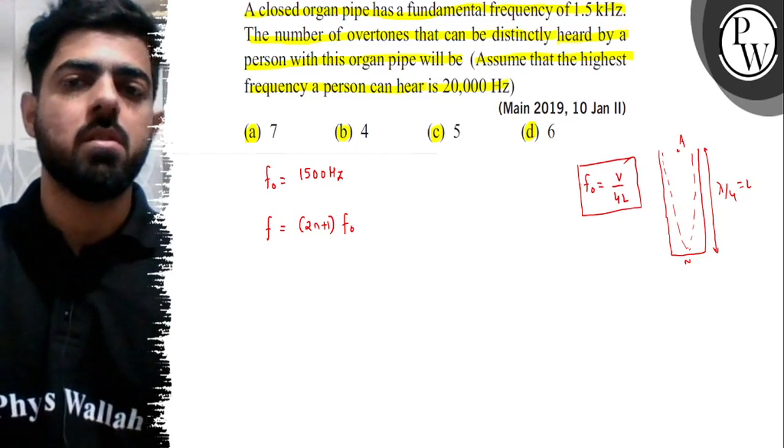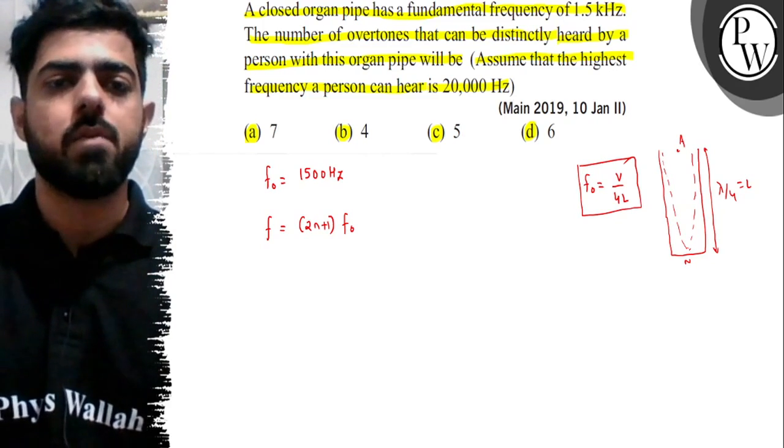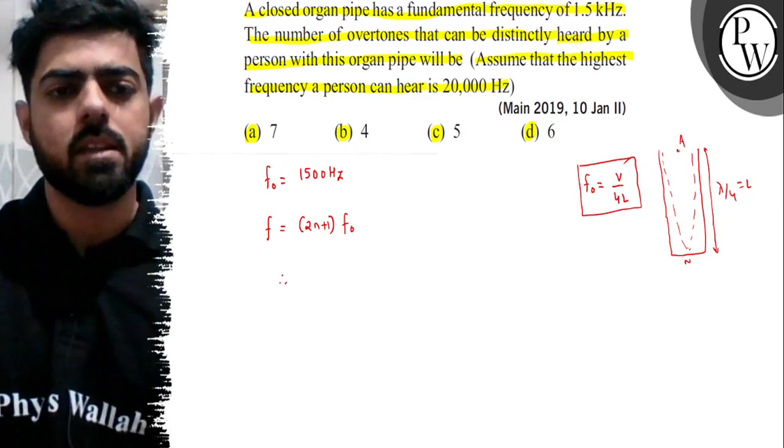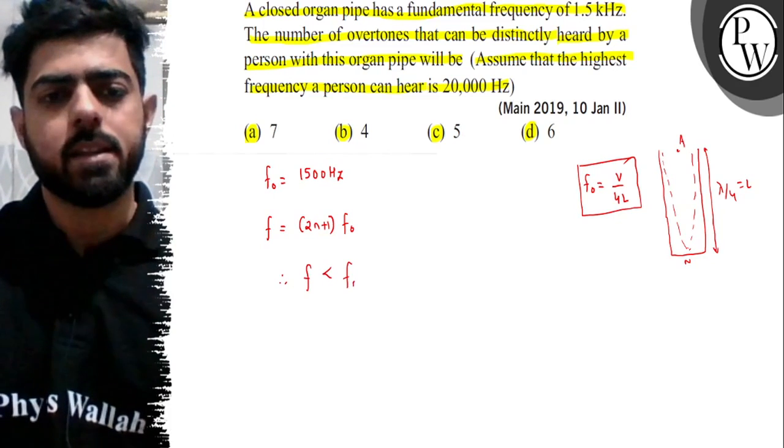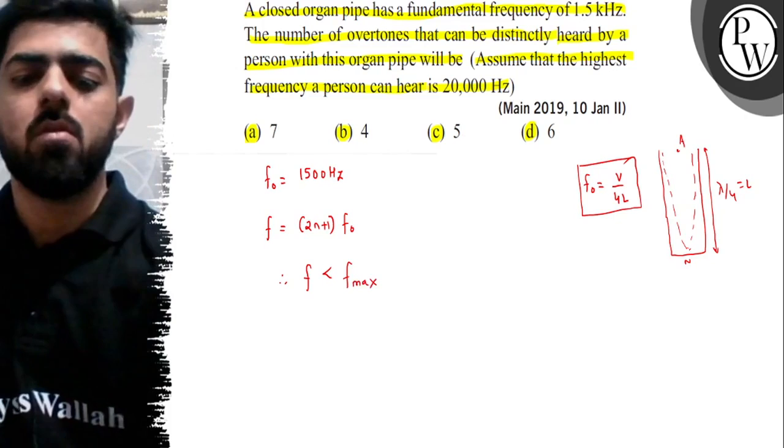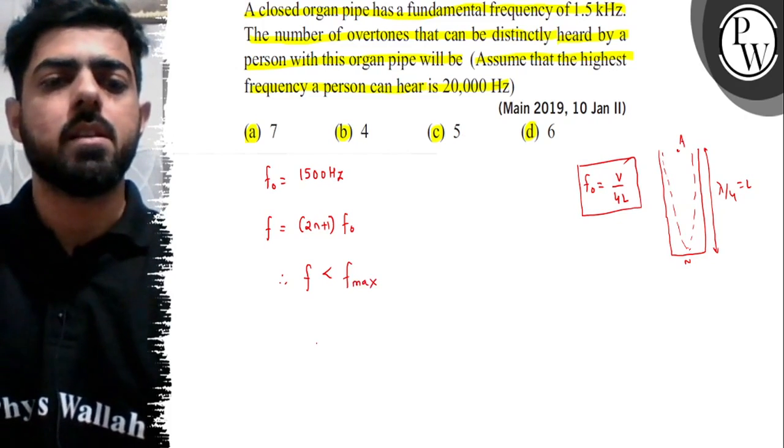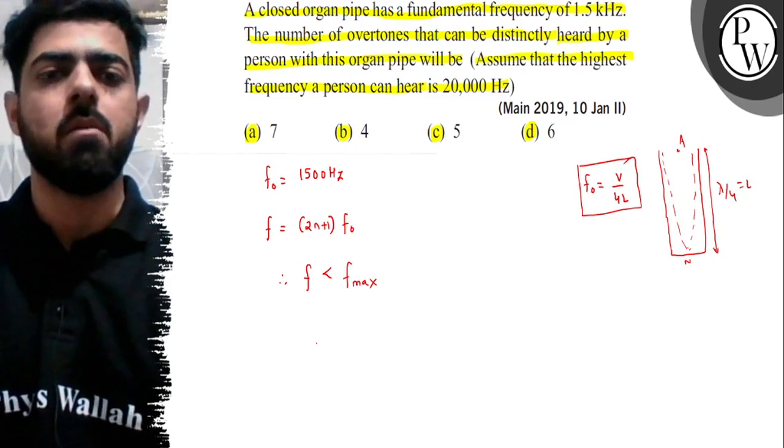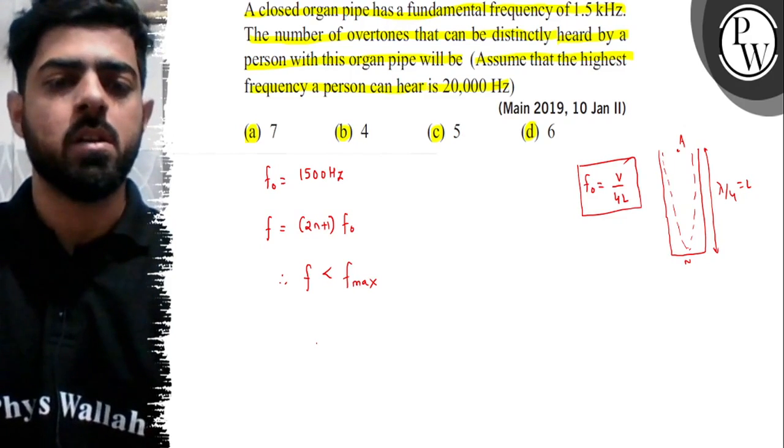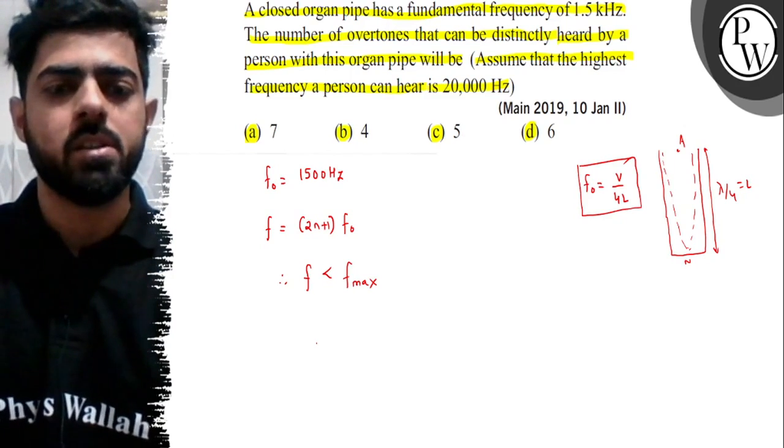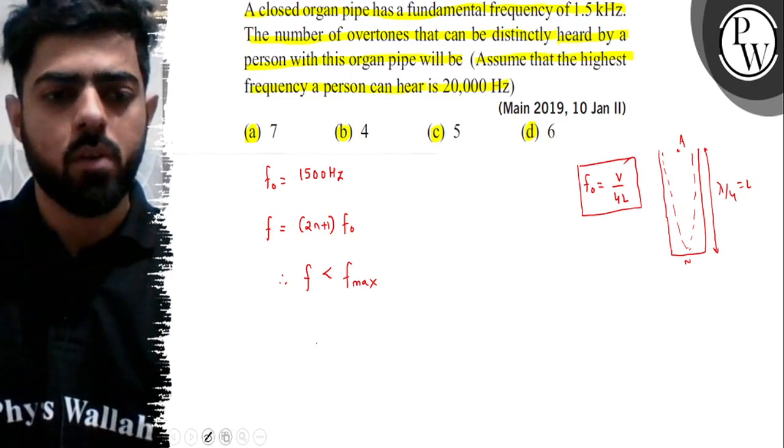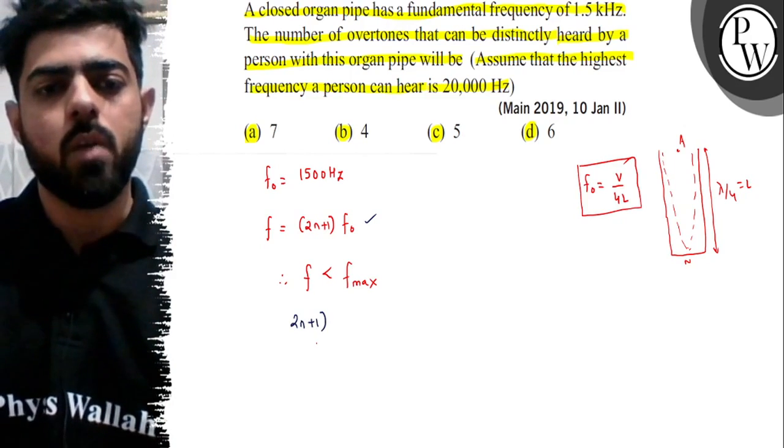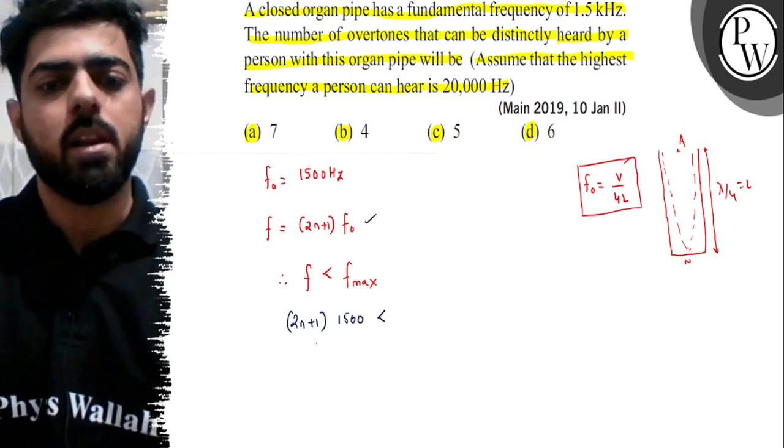We're given that the highest frequency a person can hear is 20,000 Hz. The frequency must be less than 20,000 Hz for the person to hear it. So we write: (2n+1) × F₀ < 20,000. Substituting F₀ = 1500, we get (2n+1) × 1500 < 20,000.